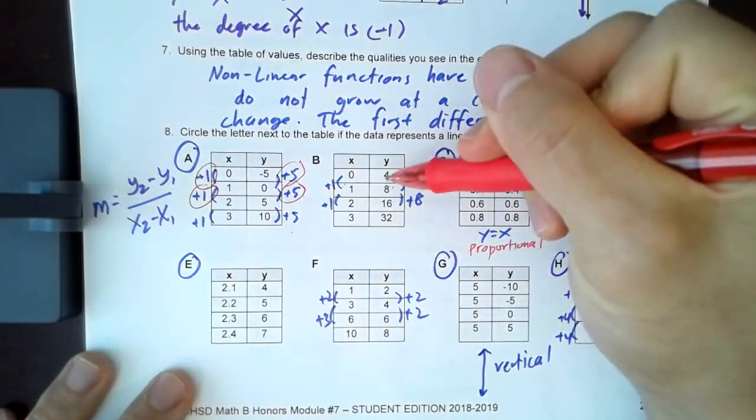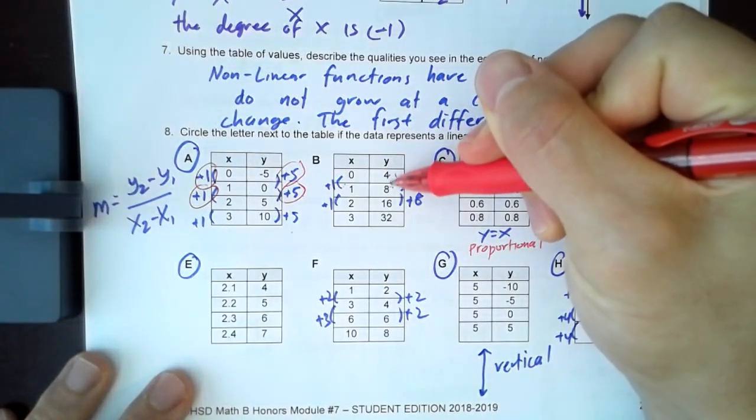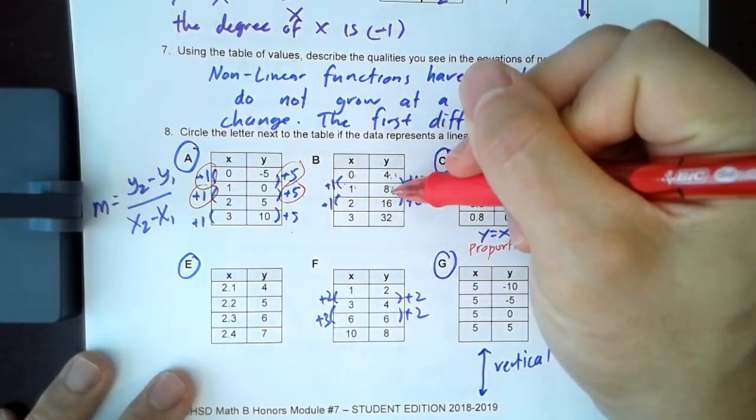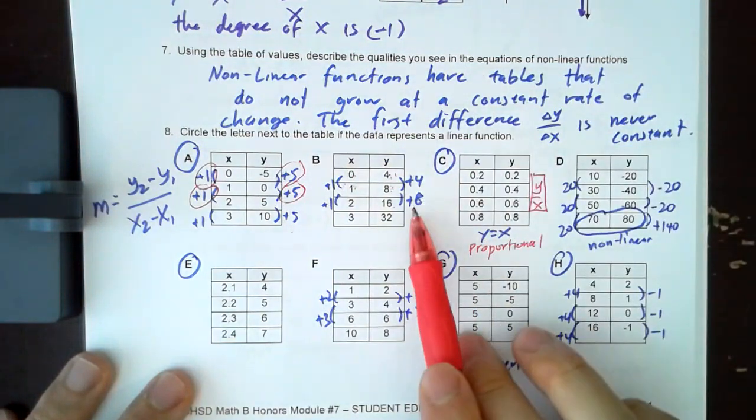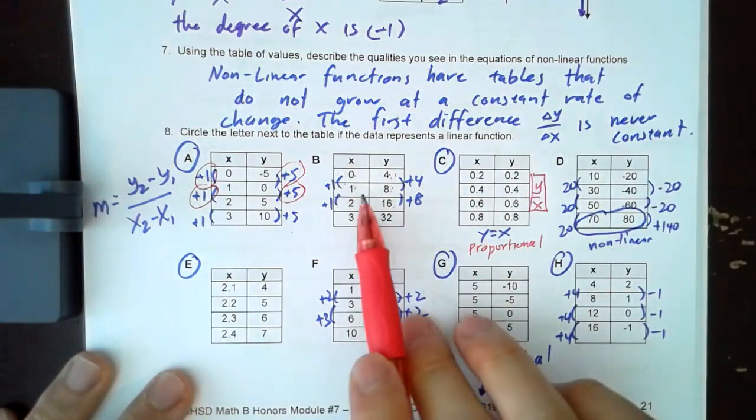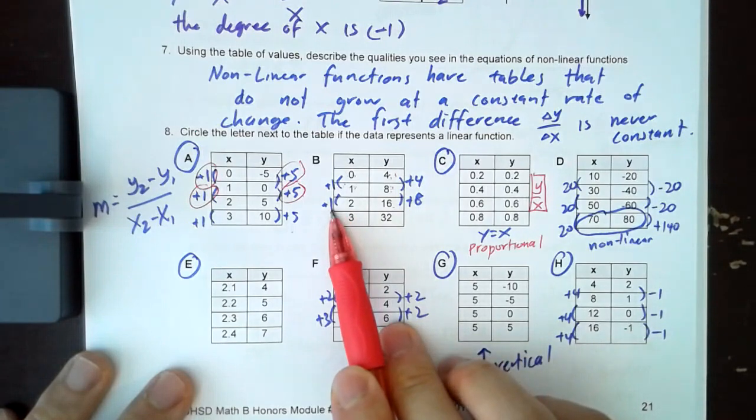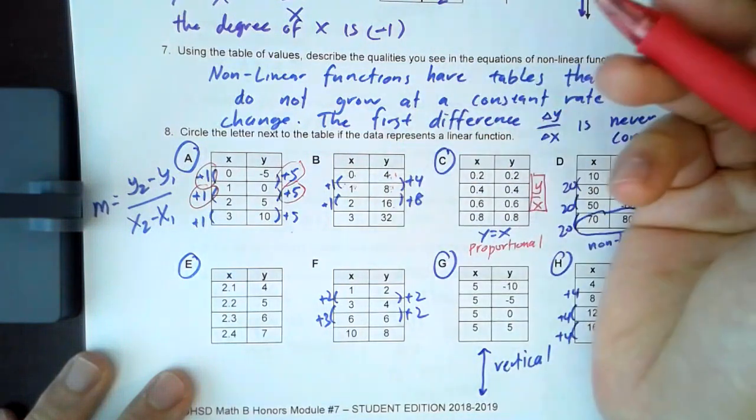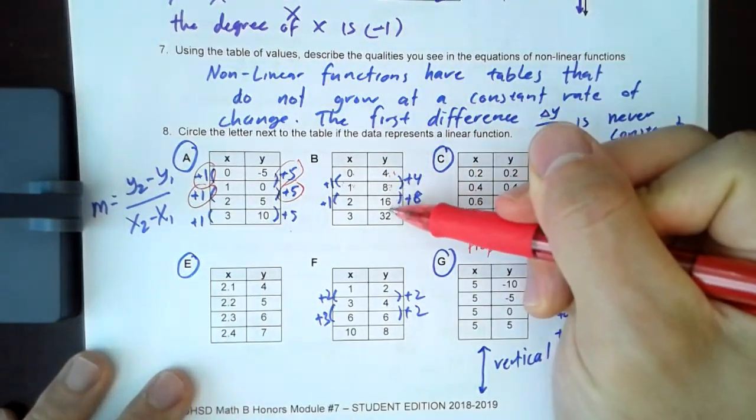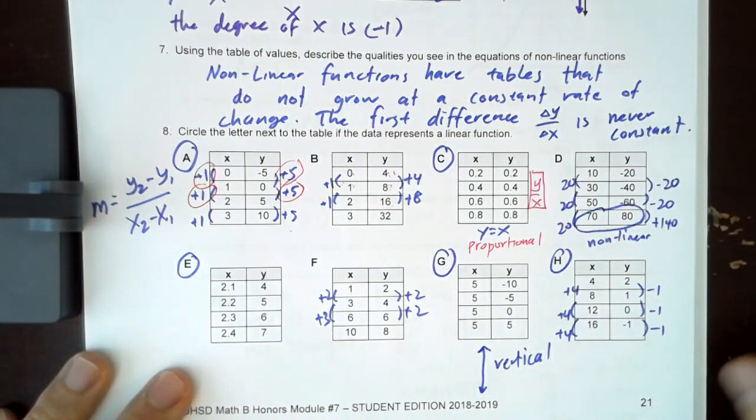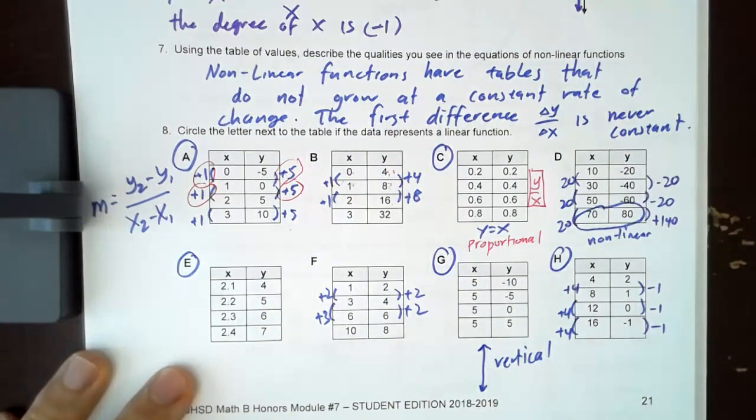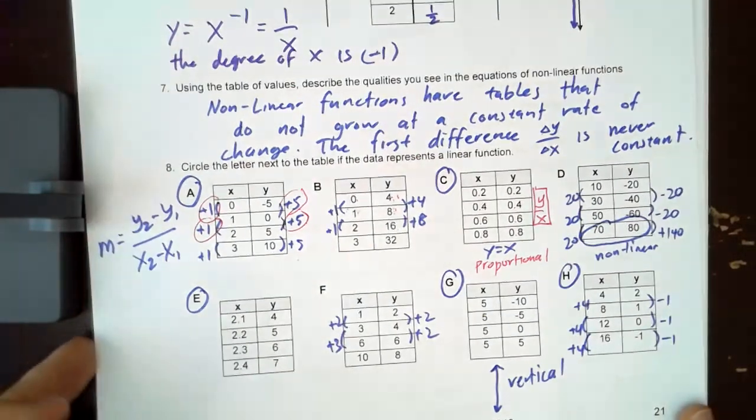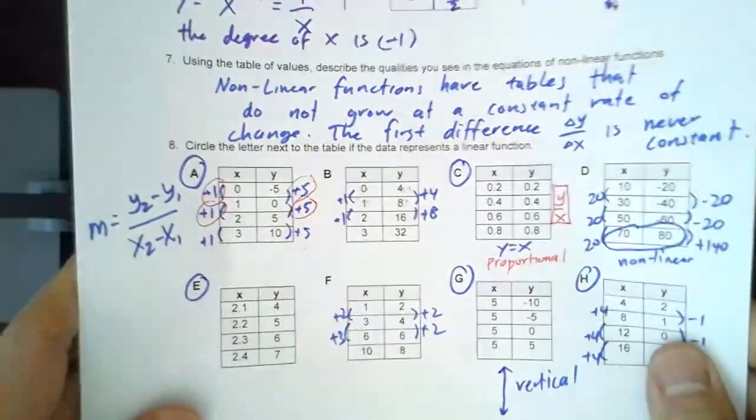So if you look at letter B, you can see how four to eight is a change in four, zero to one is a change in one, but then eight to 16 is a change in eight. One to two is still a change in one. So this is not acceptable for something to be linear. That means you're actually gaining more and more every time. So that's what we call acceleration, right? For something to be linear, you'd have to be moving at the same exact speed or the same exact rate every time.